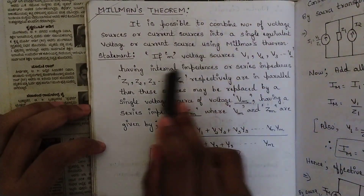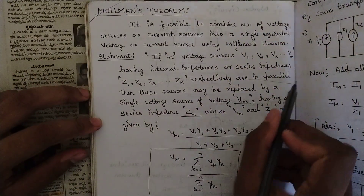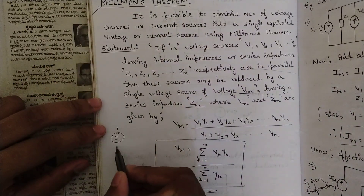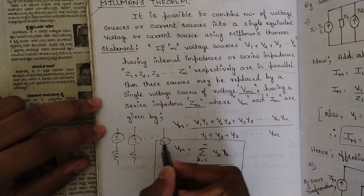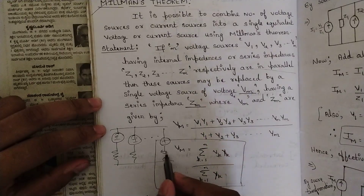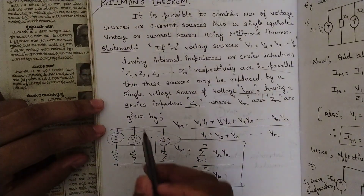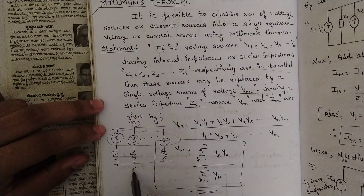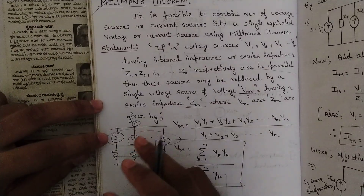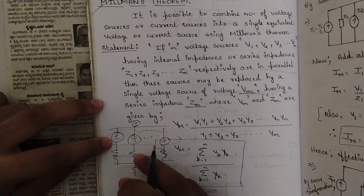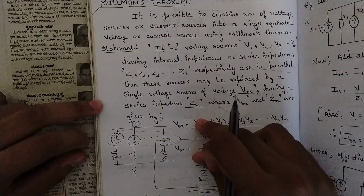The statement specifies n voltage sources with series impedances connected in parallel — that is, voltage sources along with their series impedances are in parallel, n number of them. This forms a simple circuit, and we are told to convert it to an equivalent single voltage source and equivalent single resistance. Looking at this circuit, you might think to use source transformation — converting each to a current source with a parallel resistance.